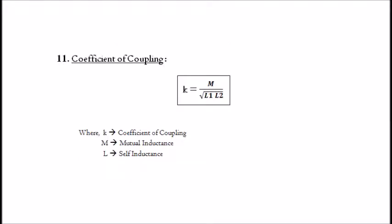11. Coefficient of coupling. It is given by: k equals M divided by the square root of L1 and L2, where k is the coefficient of coupling, M is the mutual inductance, and L is the self-inductance.